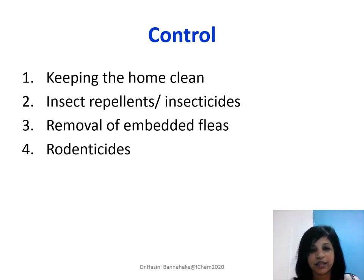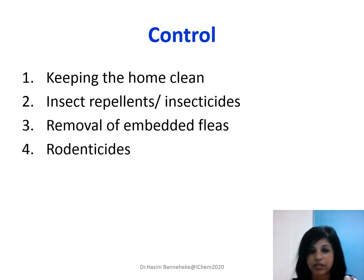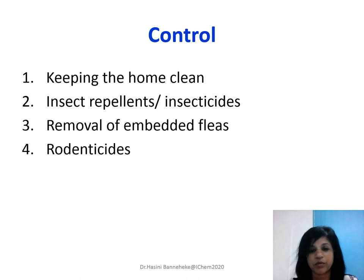How do we control fleas? That is by keeping the home clean, and by using insecticides on animals like pet animals. There are certain species of fleas which can burrow under the skin — those fleas can be removed by minor surgery. We also use rodenticides, meaning chemicals to kill rats, so that the fleas will automatically be eliminated when we use rodenticides.